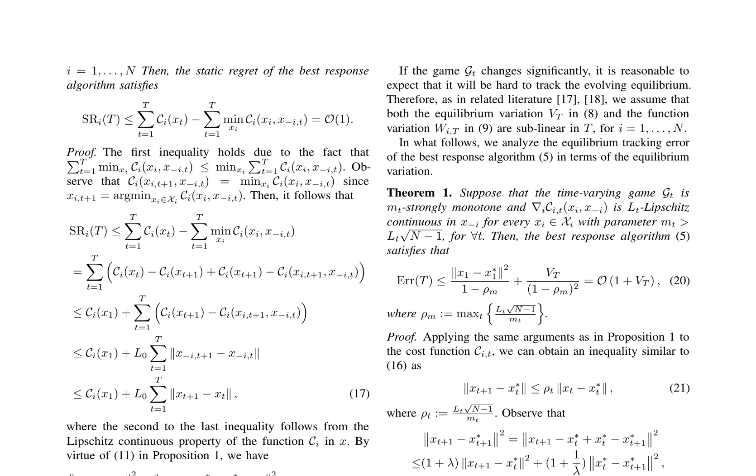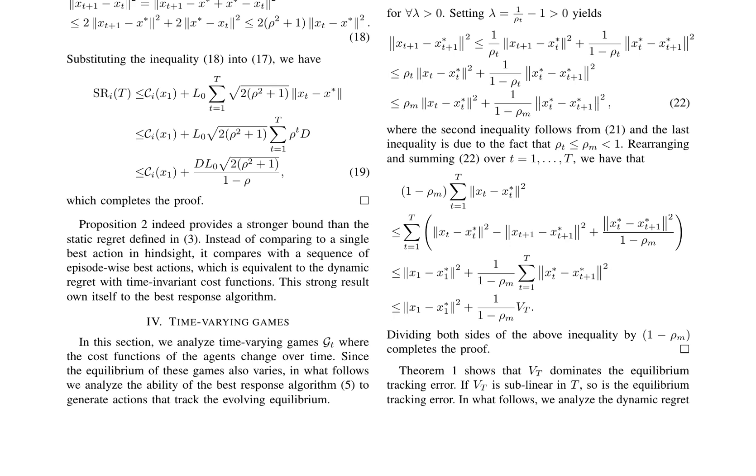The proof of Theorem 1 begins by applying similar arguments as in Proposition 1 to the cost function C(T). This leads to an inequality similar to equation 16, but with a time-varying parameter ρt. By setting λ = 1/ρt, the authors derive an inequality for ||Xt+1 - X*_{T+1}||² in terms of ||Xt - X*_T||² and ||X*_T - X*_{T+1}||². Summing this inequality over T = 1 to T and rearranging terms, they obtain a bound for the sum of ||Xt - X*_T||². Dividing by (1-ρm) completes the proof.